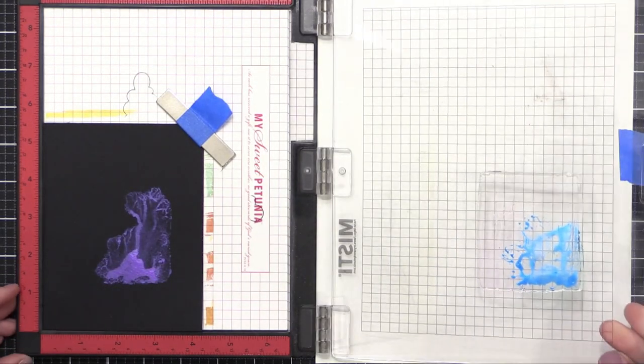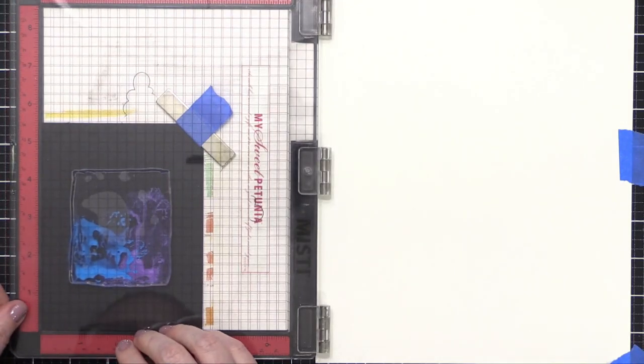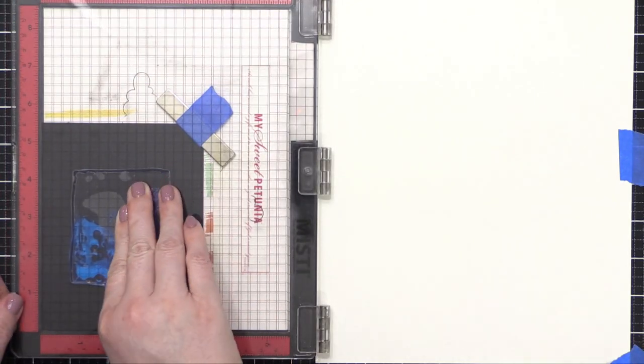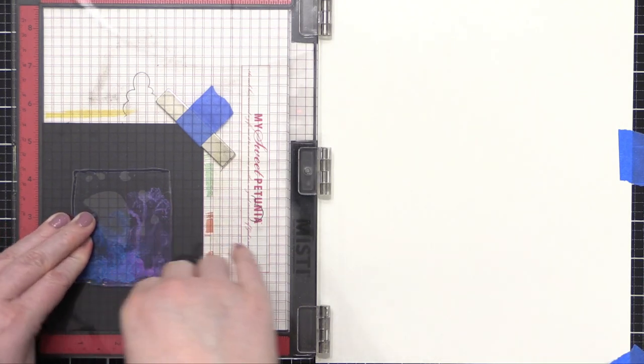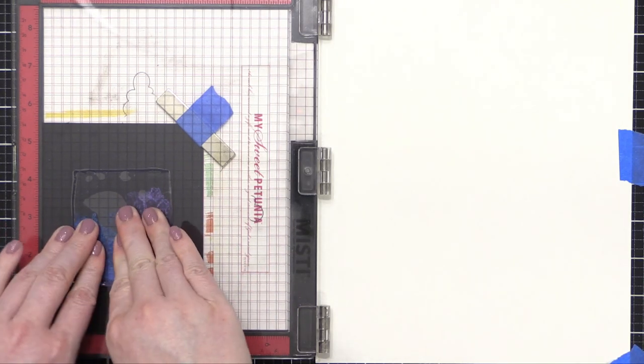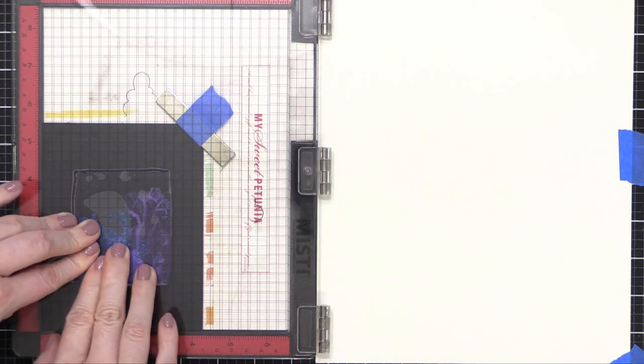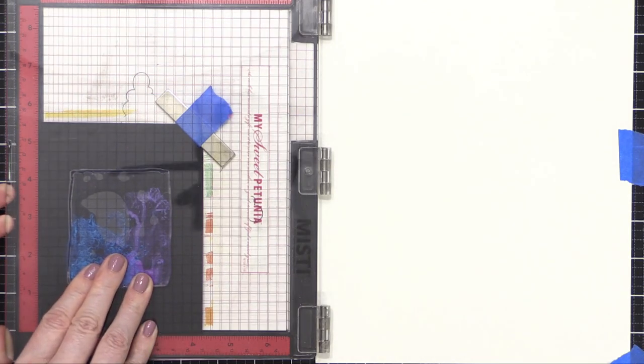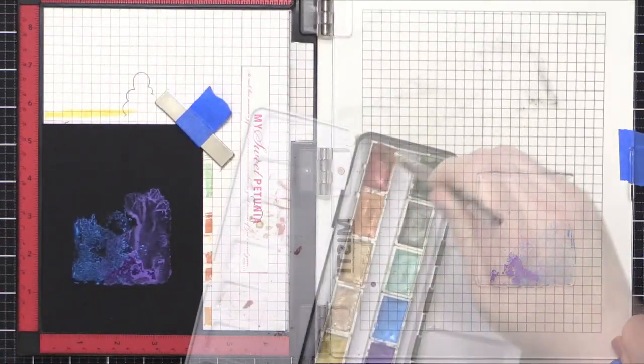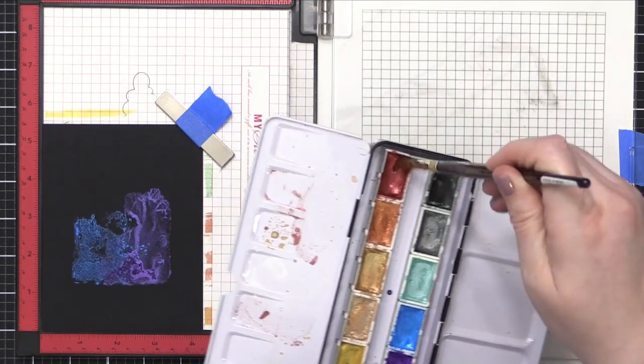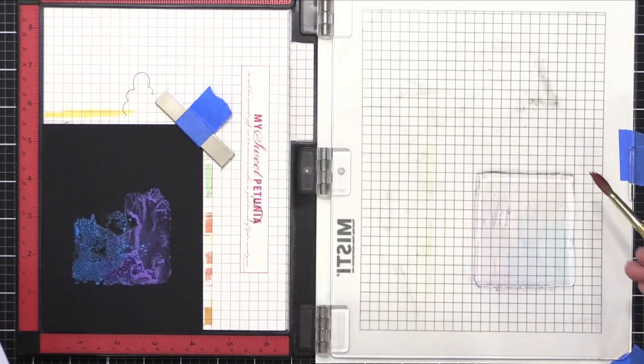And sure enough, it has a different effect. The paint doesn't spread quite as much. It kind of stays more where I put it, which is exactly what I wanted. And also when I pull up the door of my Misti, I don't get the color pooling in one particular area. So it really just depends on the look you're going for.